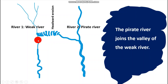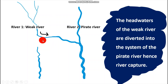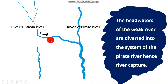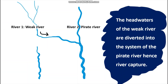Once the pirate river joins the valley of the weak river, the headwaters of the weak river are now diverted into the valley of the pirate river. This is why we say the weak river has now been captured — by having the water diverting into the valley of the stronger or pirate river.